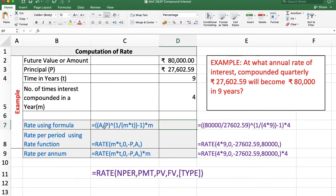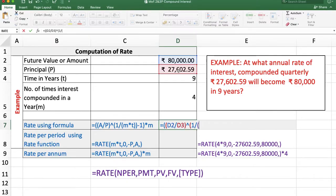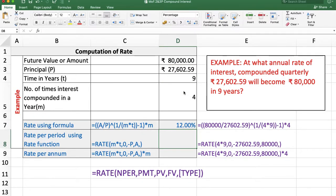We can calculate rate using a formula or the RATE function. First, the formula: =(Amount/Principal)^(1/(M*T)) - 1, and this whole result multiplied by M. Enter. The answer is 12%.